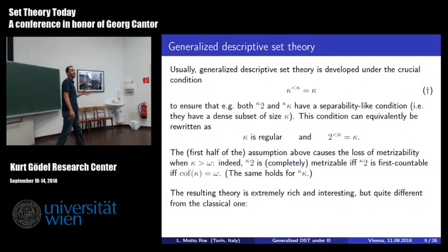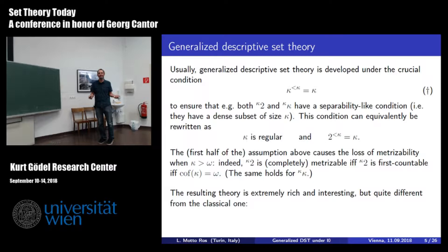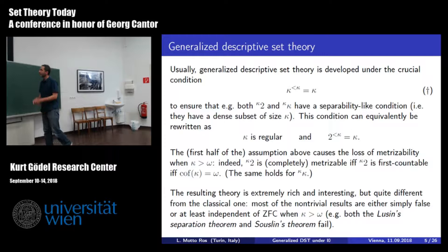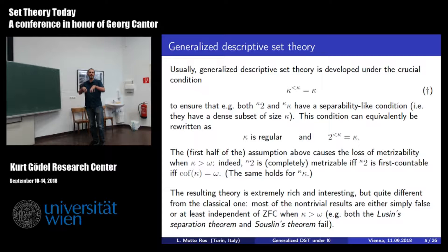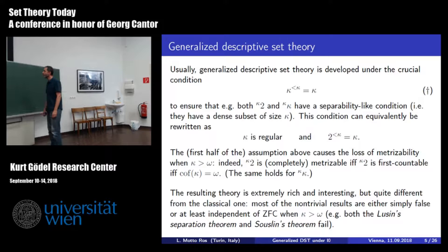The theory is extremely rich and interesting. One point is that it is completely different from classical descriptive set theory, both in the results and in the methods—you take the same definitions but end up with something completely different. Most of the non-trivial results are either simply false in the generalized context or at least independent of ZFC. For example, the result of Cantor that closed sets have the perfect set property is independent of ZFC here. The Luzin separation theorem—separating two disjoint analytic sets by a Borel set—is simply false. And the consequence that co-analytic sets are Borel is also false.